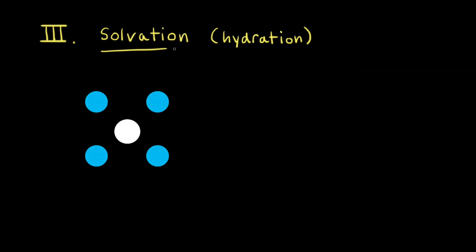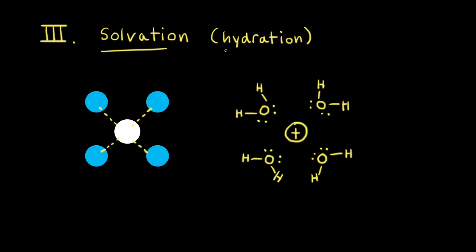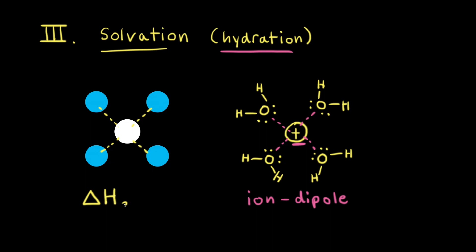The third step is called solvation, which refers to the interaction of the solute and the solvent. So imagine there's an attractive force between this white solute particle and these four blue solvent particles. If the solvent is water, this process is called hydration. If we think about a positive cation interacting with water, since opposite charges attract, the positive cation is attracted to the negative end of the water molecule. This type of interaction is called an ion-dipole interaction. When the solute comes together with the solvent, energy is released. Therefore, delta H-3 is negative.